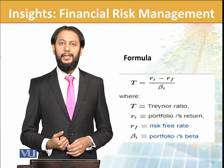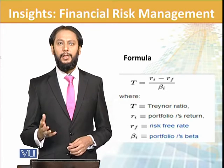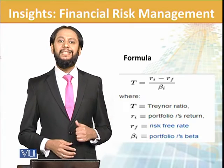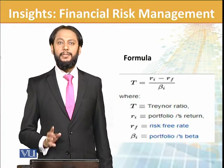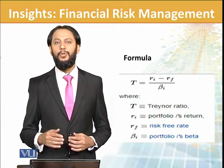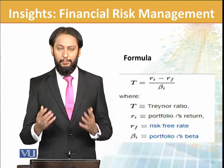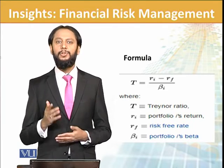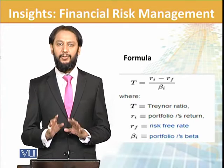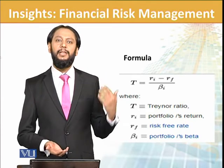The formula for the Treynor ratio is the return minus the risk-free rate — similar to the Sharpe ratio — but the denominator is different. Here we use beta. Beta is a measure of systematic risk, so it only accounts for the systematic risks present in the portfolio. In simple terms, the Treynor ratio calculates how much excess return we are getting against the systematic risk we have taken.